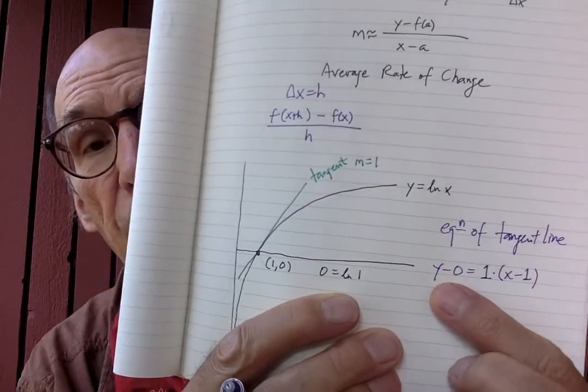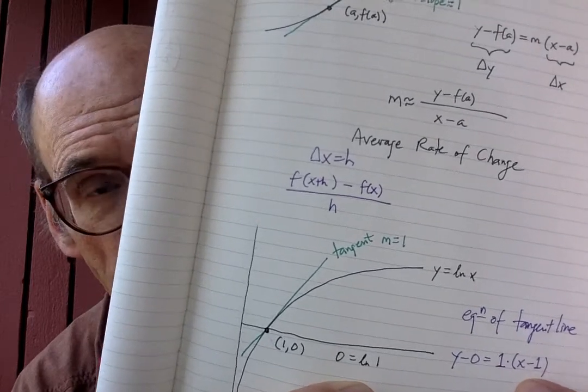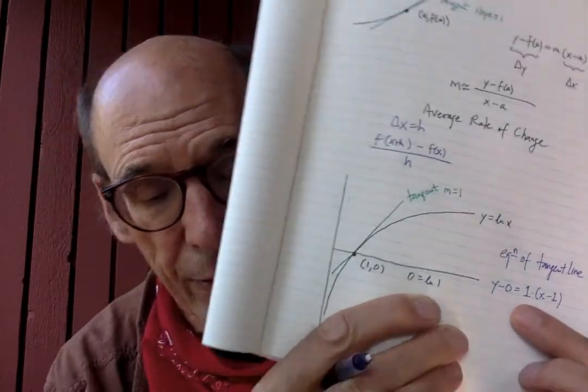Now we get the equation of the tangent line. Don't simplify anything. y minus 0 equals 1 times x minus 1. There are two ways you can mess yourself up writing this down — you might simplify y minus 0 to just y, and 1 times something to just the thing, but keep the pattern: the slope is there explicitly. And so what we're saying is, because the tangent line is close to the graph, the natural log of x is approximately x minus 1 if x is close to 1.